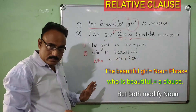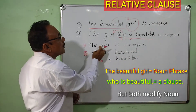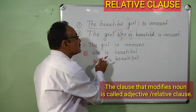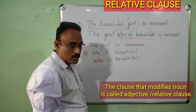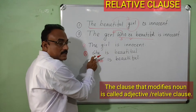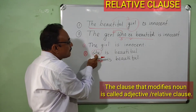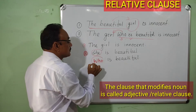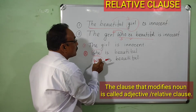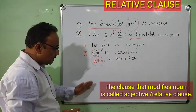The girl is innocent. She is beautiful. These two sentences are independent clauses. 'The girl is innocent' is an independent clause, and 'she is beautiful' is also an independent clause.